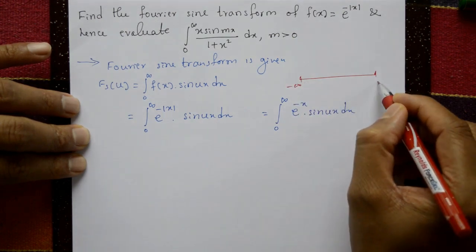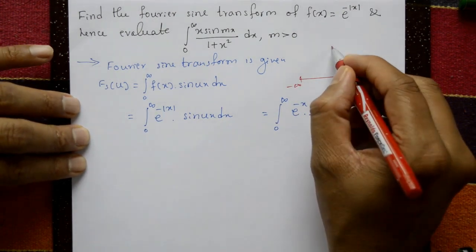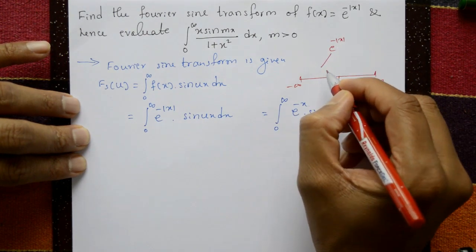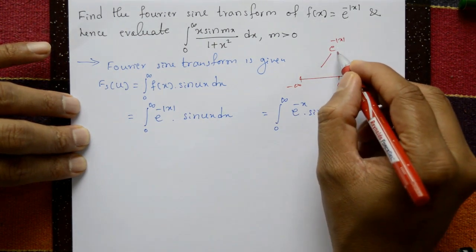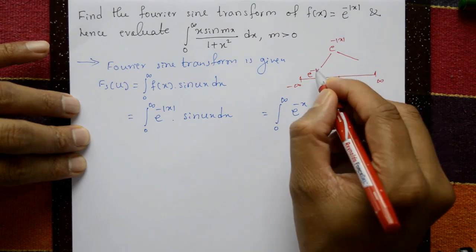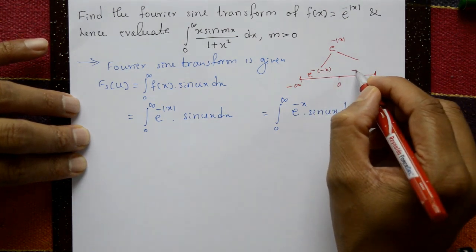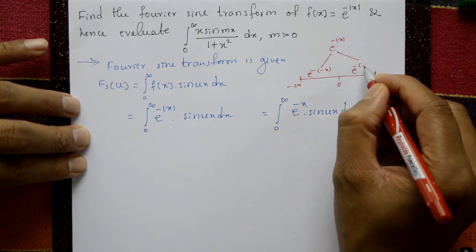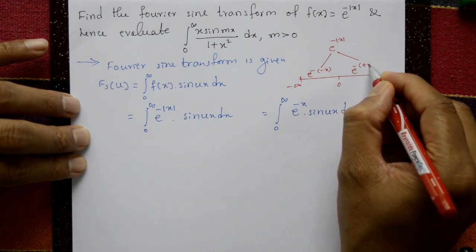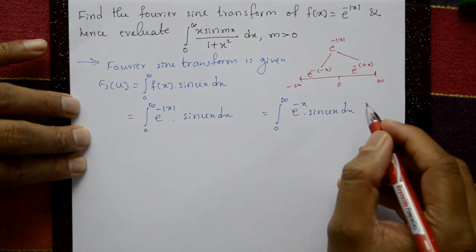For the range from 0 to infinity, e^(-|x|) on the positive side means e^(-x). So the integral becomes the integration from 0 to infinity of e^(-x)·sin(ux) dx.